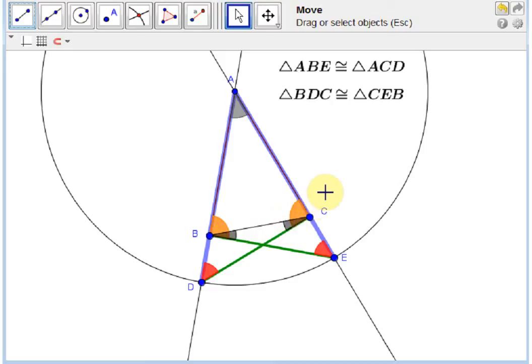In other words, the base angles of the isosceles triangle are equal, which is what we wanted to prove.